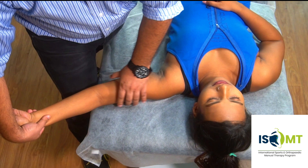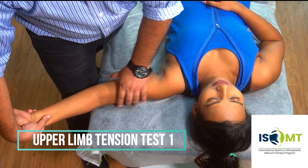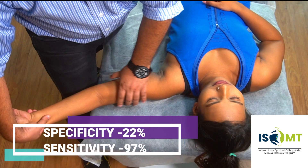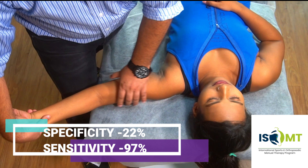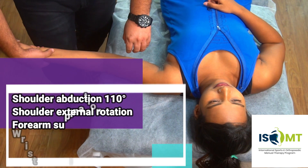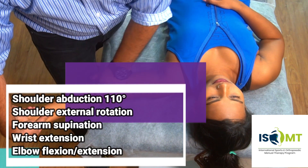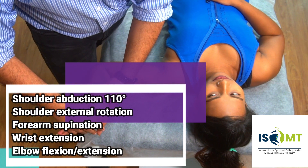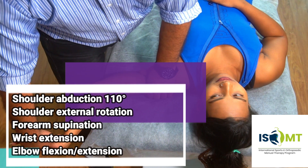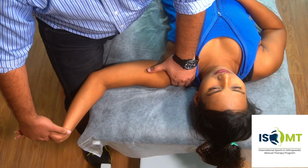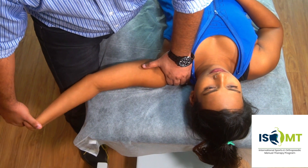The first test to be performed in the cluster of Wainner is the upper limb tension test, which has a sensitivity of 97% and specificity of 22%. To perform this test, have your patient lying supine with the arm at 110 degrees abduction, arm rotated externally, forearm supinated, and wrist in extension.